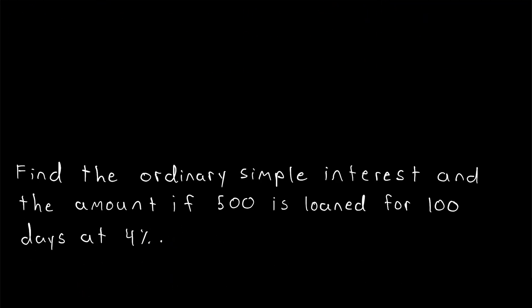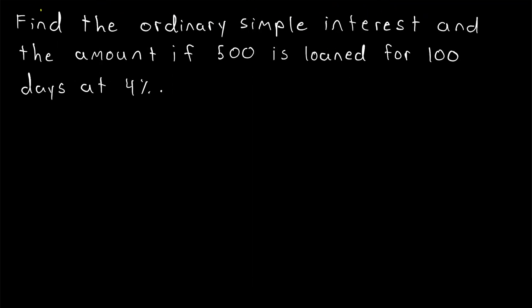All right, now let's quickly go through a couple more examples. Give this example a try before watching the solution. Find the ordinary simple interest and the amount if 500 is loaned for 100 days at 4% ordinary simple interest. Just to explain the language here, the amount is the principal plus the interest.